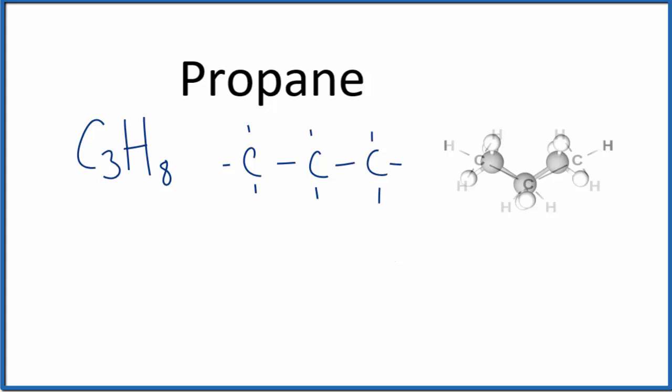Another way to write this is with a skeletal structure. That would look like this here. The skeletal structure, we have a carbon here and here and here, and we just don't write the hydrogens. Let's do an overlay again. And you can see how that works.